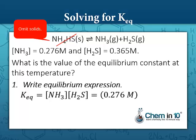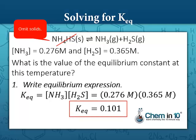We plug in our values. The concentration of ammonia gas is given to us as 0.276 molar times the concentration of hydrogen sulfide gas, which is 0.365 molar. We multiply these together and we get 0.101 as our equilibrium constant. Notice we don't put units in the equilibrium constant.